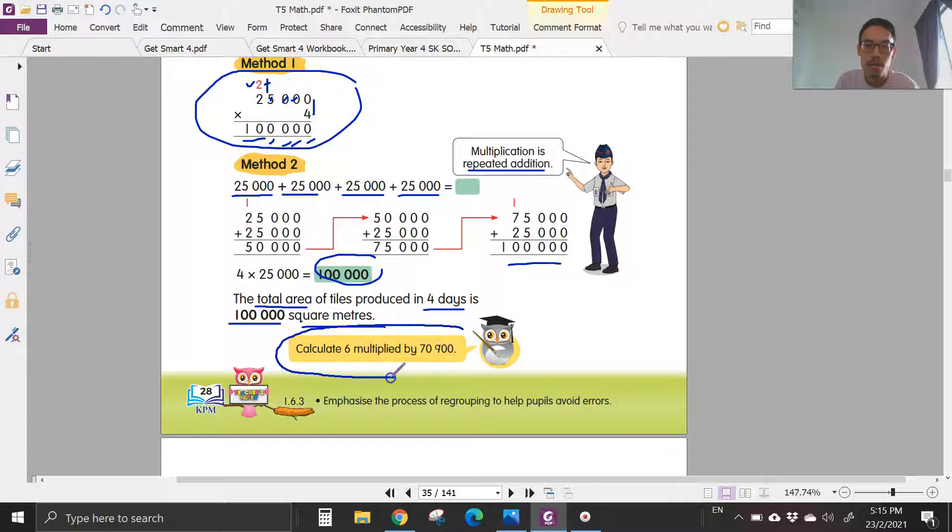Let's look at this. Calculate 6 multiplied by 70,900. We take 6 and then times 70,900. 6 times 0 is 0, 6 times 0 is 0, 6 times 9 is 54. Write 4, 5 on top. 6 times 0 is 0 plus 5 is 5. When I see zeros in front, I just write 6 times 9 is 54. 6 times 7 is 42. So your final answer is 425,400.